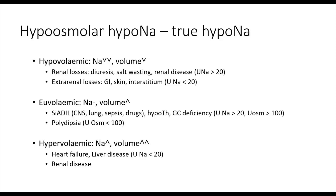Now that we've discussed the different subtypes of hypoosmolar hyponatremia and their mechanisms, we can go on to discuss the treatments, which aim to essentially reverse the underlying pathology. In hypovolemic hyponatremia, because the problem is both sodium losses and volume loss, you treat this by replacing both volume and sodium with normal saline or other isotonic crystalloid intravenous fluids containing sodium. You also have to treat the underlying cause of renal or extra-renal sodium losses, such as treating an infection causing GI losses or stopping diuretics causing renal losses.